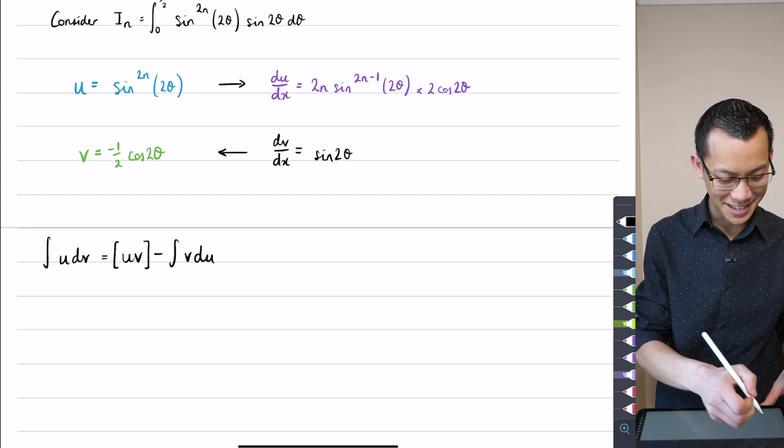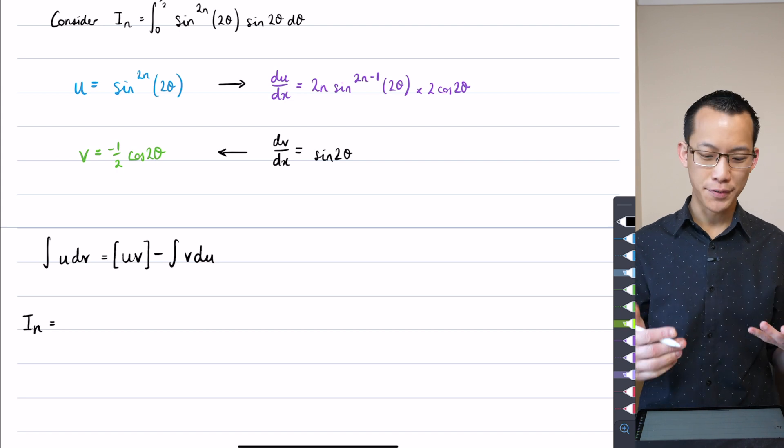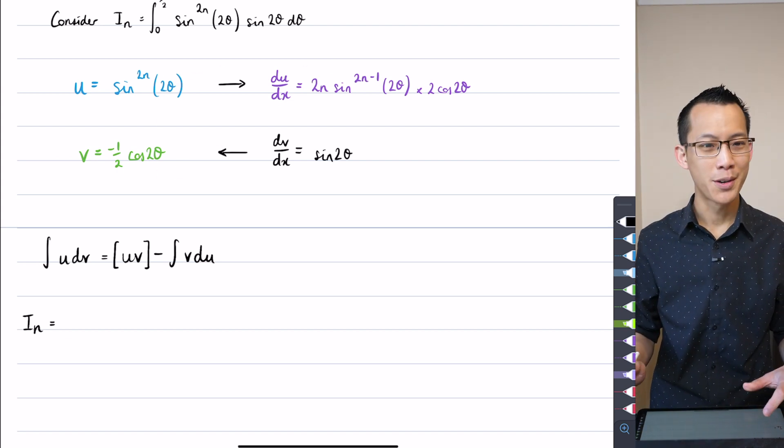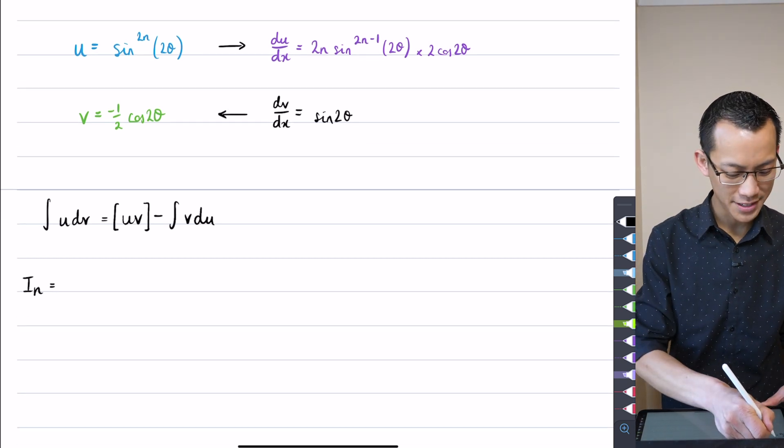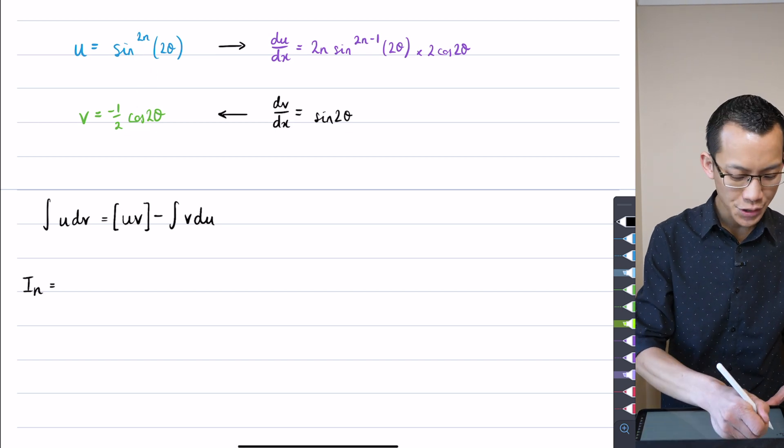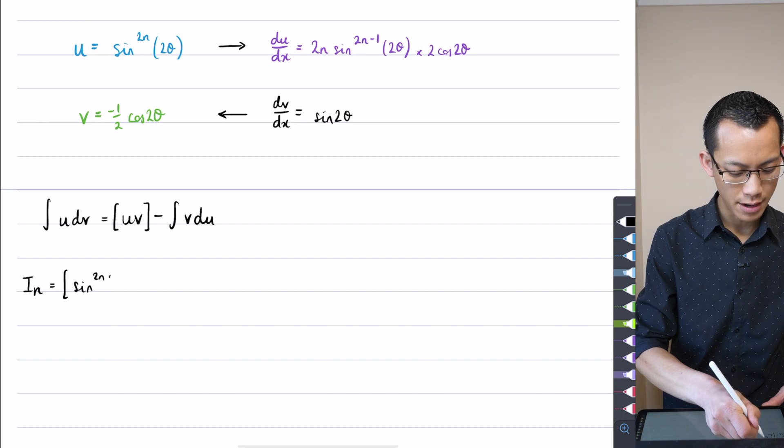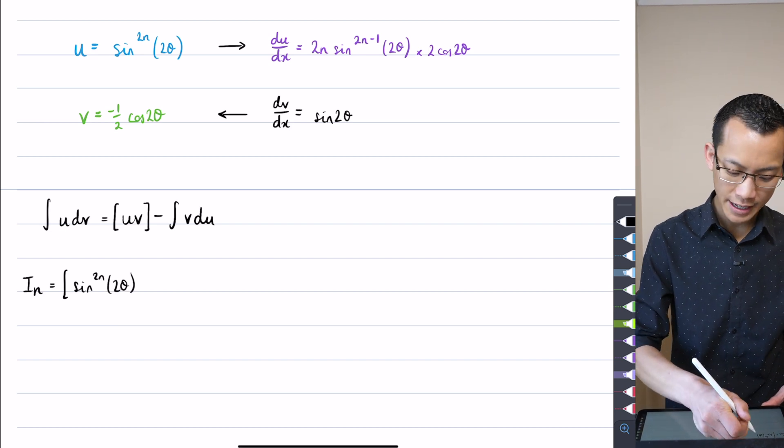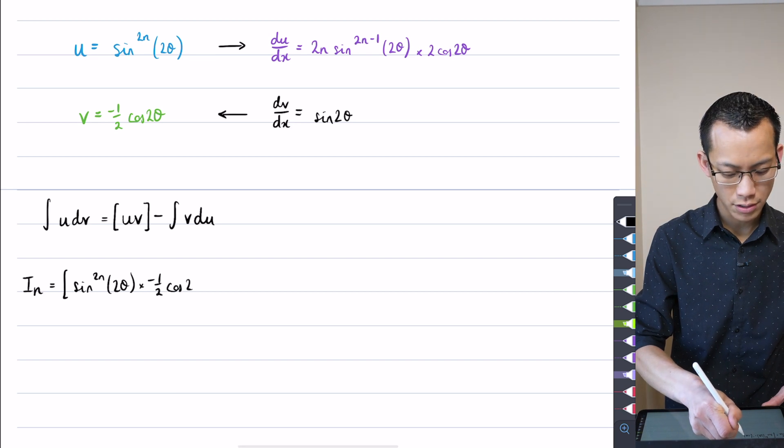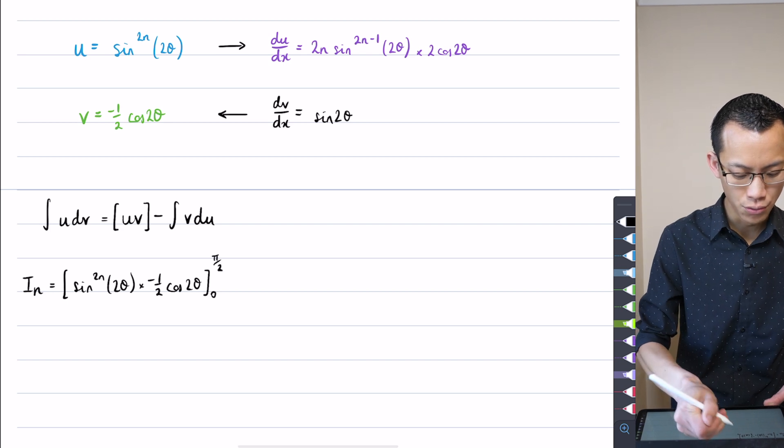Alright, so it's going to be a very long line to begin with but we need to substitute in all of our different components which you can see I've colored up in here. So hold on to your hats, here we go. First I begin with my UV which is my blue and green bits here, right? So here it comes: here's U, sine 2N 2 theta, and here comes V, negative a half cos 2 theta, and I'm going to integrate that from 0 to pi on 2.